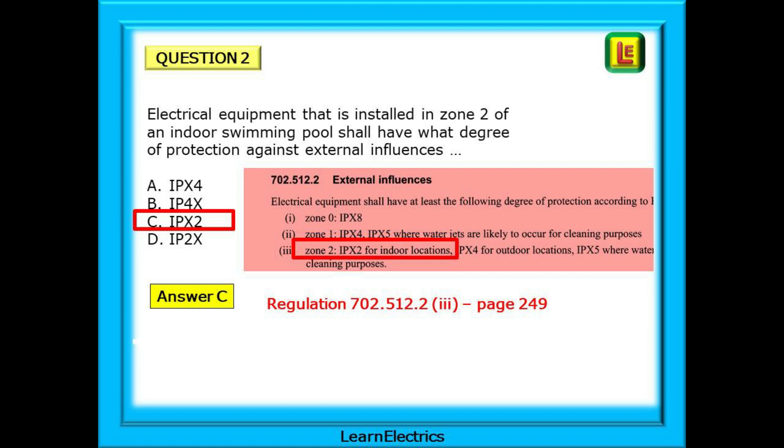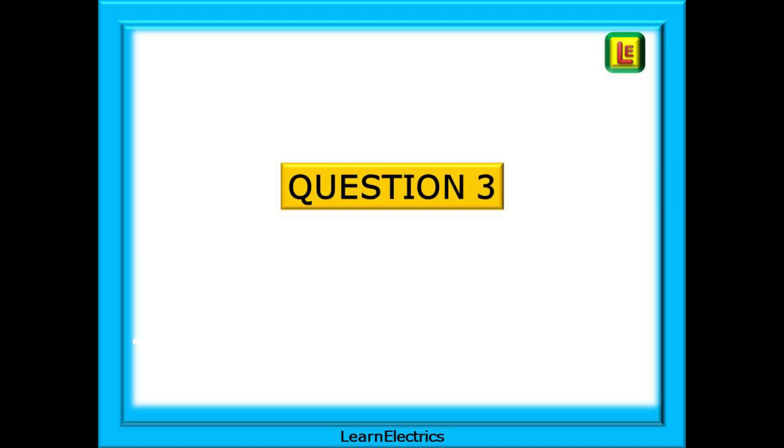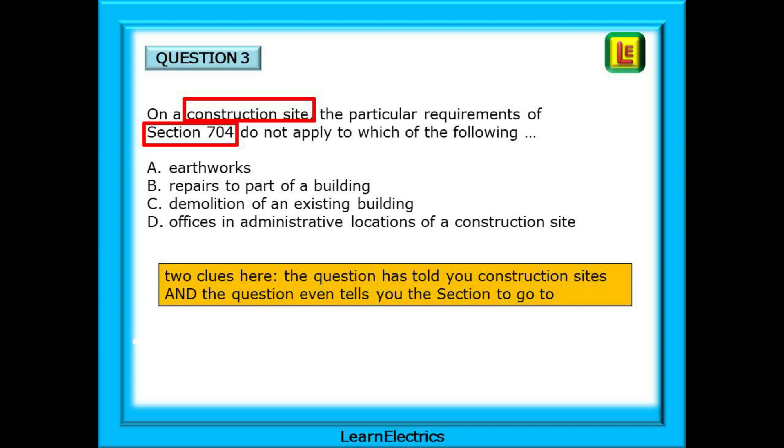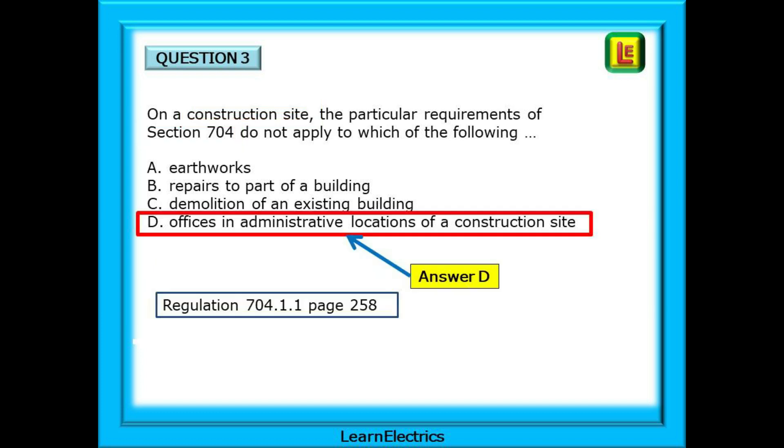Moving on to question 3: On a construction site the particular requirements of section 704 do not apply to which of the following? Pause the video and attempt the question. You are given two clues with this question: On a construction site and it tells you section 704. How much more help do you need? At the top of page 258 you will find regulation 704.1.1. And reading what does and doesn't apply we have answer D. Section 704 does not apply to the offices.